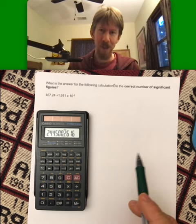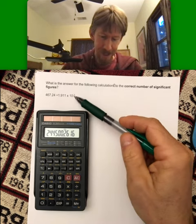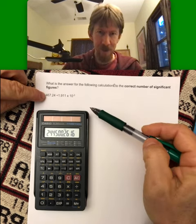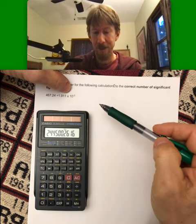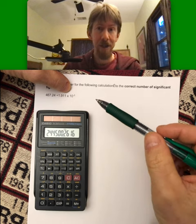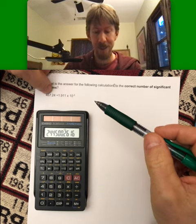And our hint that it worked is that we're taking a big number, 467, and we're dividing it by a number less than one. And so mathematically our answer should be bigger than 467.